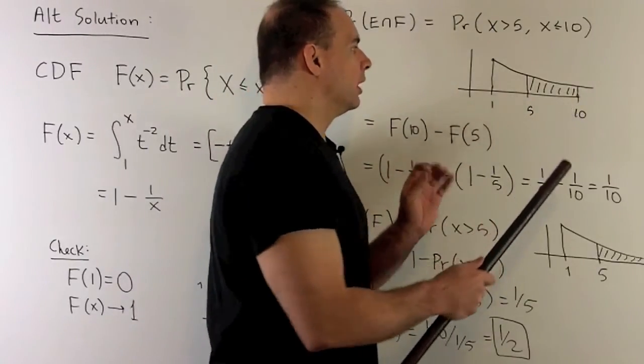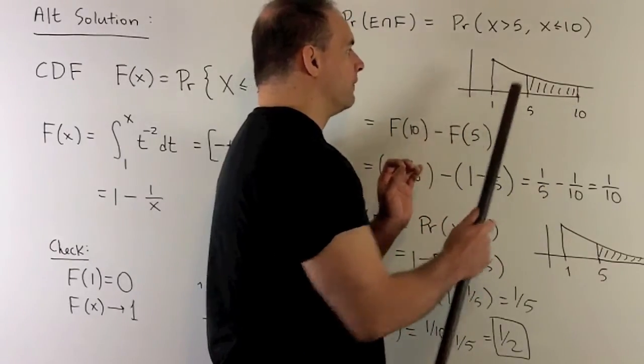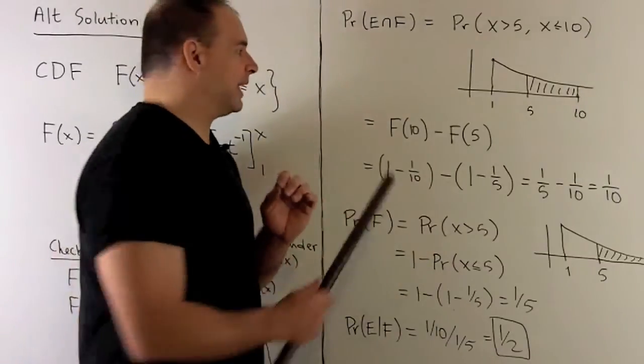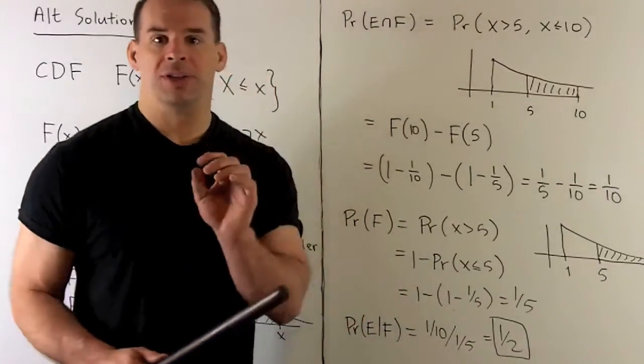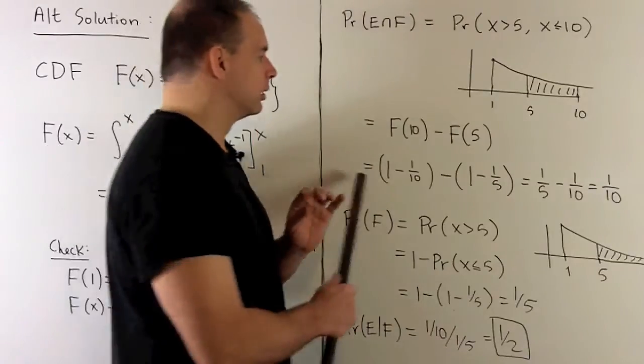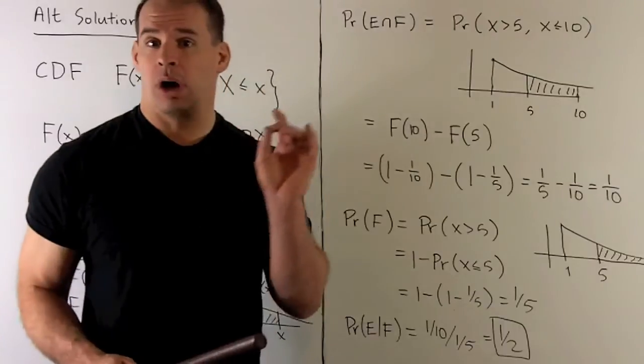Now, if you notice, we want the area between 1 and 10, take away the area between 1 and 5. So that's just gonna be capital F of 10 minus capital F of 5. Put it into 1 minus 1 over x. Then we get our 1 over 10 that agrees with what we had before.